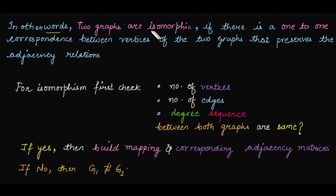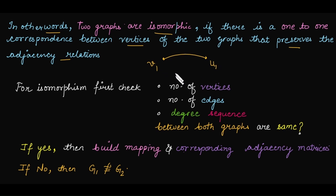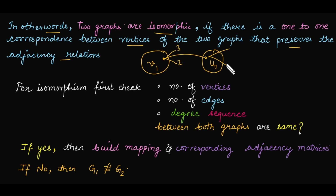In layman's words, two graphs are isomorphic if there exists a one-to-one correspondence between the vertices and they preserve the adjacency relation. This means if we are mapping V1 with some element U1 in the second set, whatever adjacency relation V1 has, the same must be followed by its image. If V1 has two adjacent vertices, then U1 must also have two adjacent vertices, and if their degrees are three and two, there must be two adjacent vertices such that one has degree three and another has degree two.